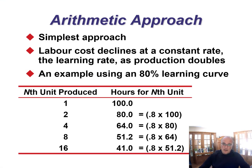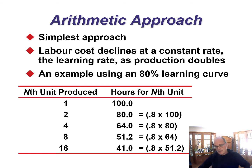The arithmetic approach is the simplest approach — labor costs decline at a constant learning rate as production doubles. Using an 80% learning curve example: the first unit took 100 hours, the second unit takes 80 hours (0.8 times 100), and the fourth unit is 0.8 times 80 because we're going down at a constant rate. That's an easy one to calculate, but it only works for 1, 2, 4, 8, 16.